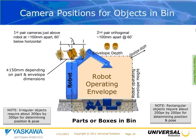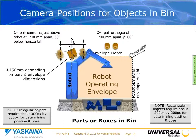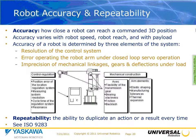For bin picking, the robot operating envelope extends down to the bottom of the bin, because you need to see that. The key difference is your starting angle is steeper — we recommend starting at about 60 degrees from the horizontal, because you need to see into the bin and adjust from that point. The number of pixels required for irregular or rectangular objects remains the same. Now I'll turn it over to Eric, who will talk about servoing and robot accuracy impact.